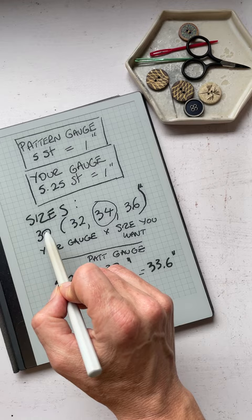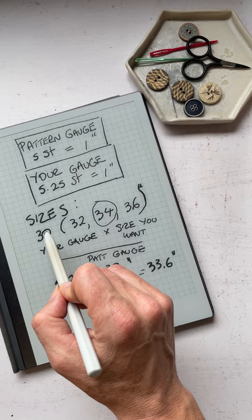So if I am knitting a pattern and the gauge in the pattern is 5 stitches for each inch, but when I knit I'm getting 5.25 stitches, and this is just approximately different sizes in the pattern.